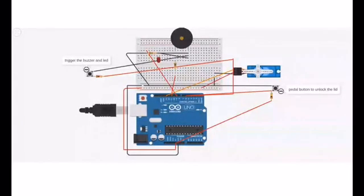On the left side, we have the trigger button that will turn on the LED and buzzer when the lid is open, and a lock mode. On the breadboard, there is the buzzer, LED, and servo connected in order to make sure this product works. On the right side, there is a button for the pedal, where we put the button on the pedal that acts as the switch for the servo.